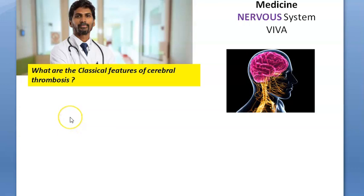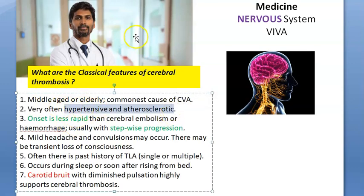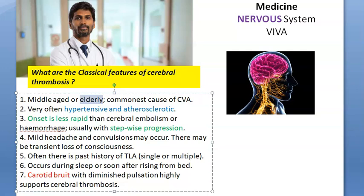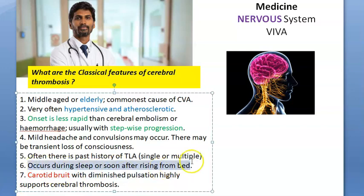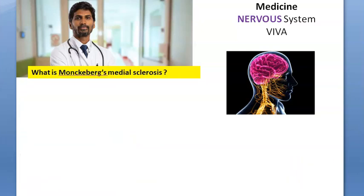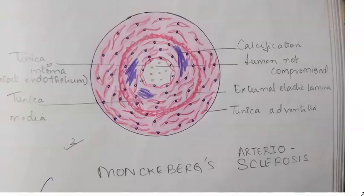What are the classical features of cerebral thrombosis? Cerebral thrombosis usually occurs in hypertensive and atherosclerotic — mostly elderly — patients. It is the most common cause of cerebrovascular accident. The onset is slow compared to cerebral embolism and hemorrhage. There can be stepwise progression, and a carotid bruit is highly supportive. It tends to occur during sleep or soon after rising from bed, when clot-forming factors are more active.